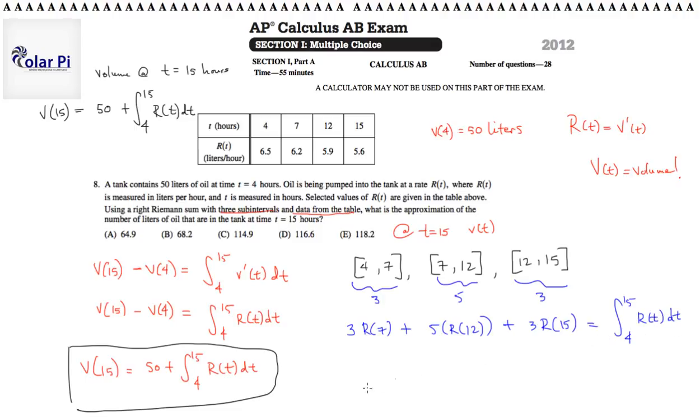And, of course, all of this is to estimate the integral from 4 to 15 of R of T dt. That's why we're doing all of this. Right? Okay, great. And, so then using the table values at 7, it looks like it's 6.2. So, we want 3 times 6.2.